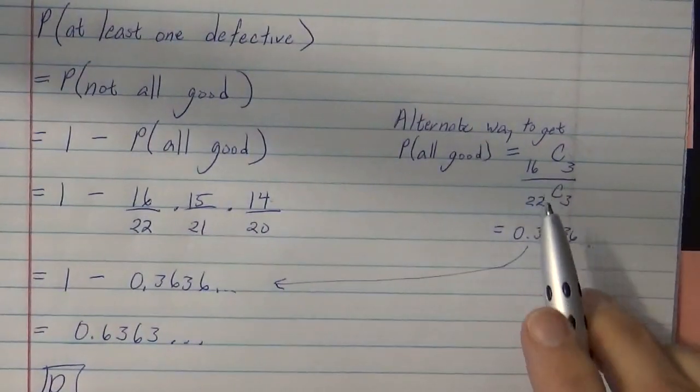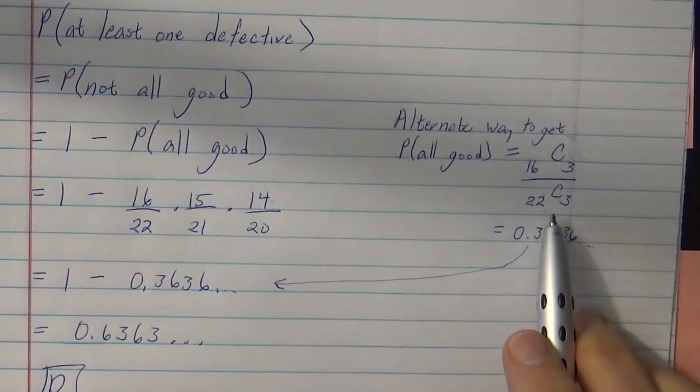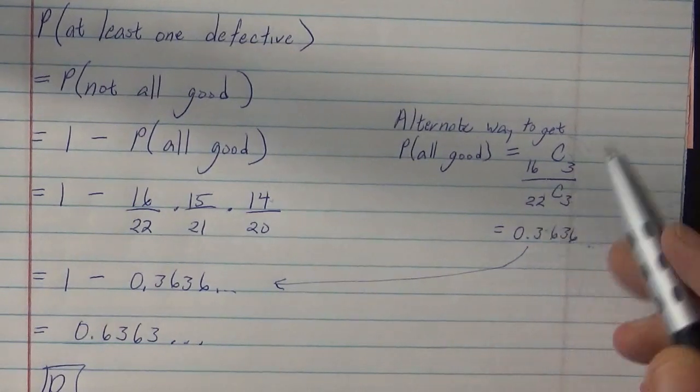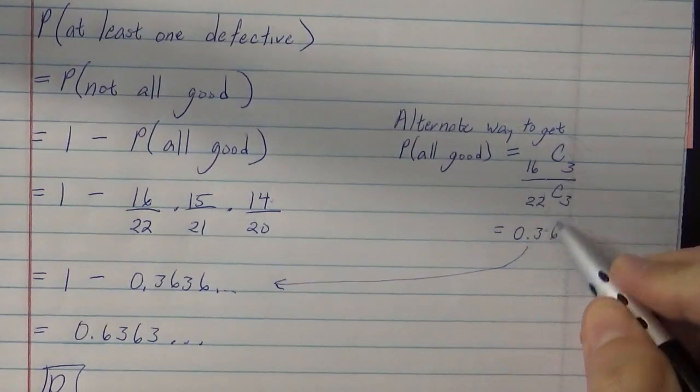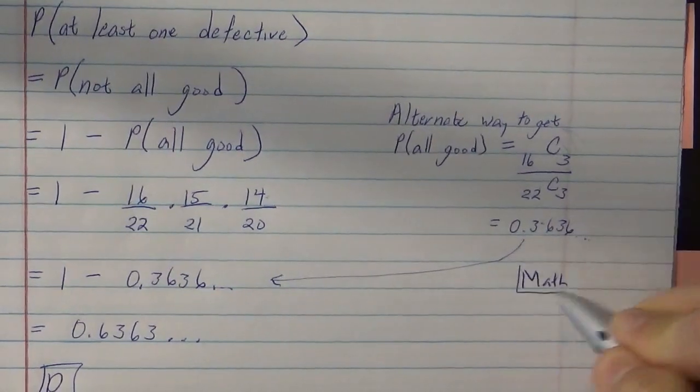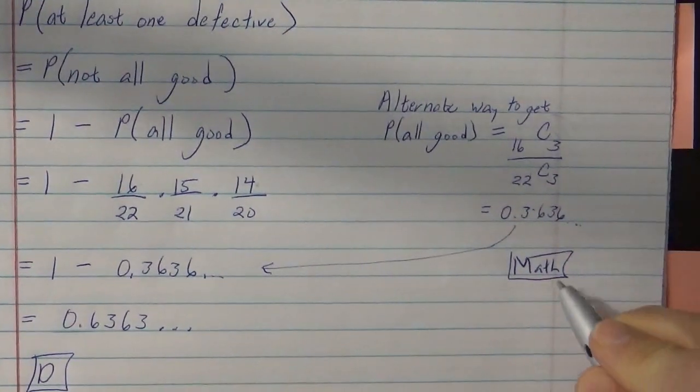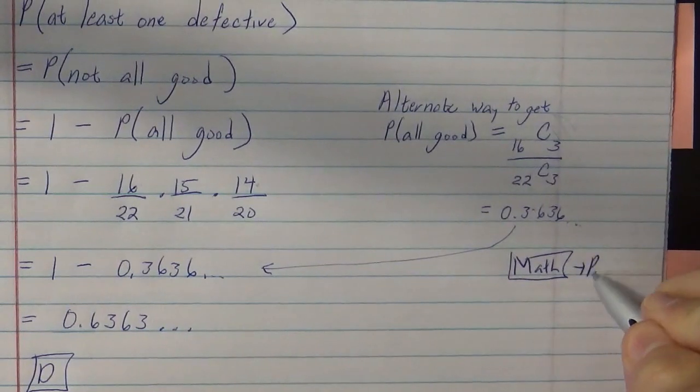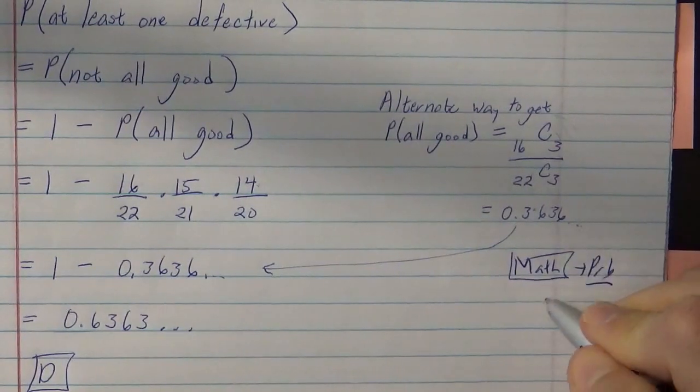If you forget how to do this on your calculator, I do have other videos that have combinations. If you have the TI-83 or 84, it's under the math, and then you scroll over to probability, and then you find the NCR.